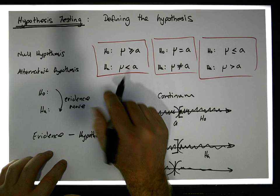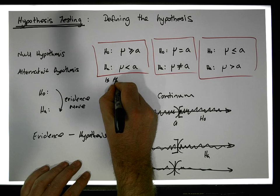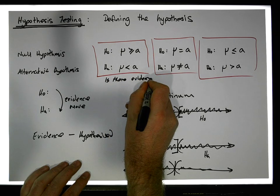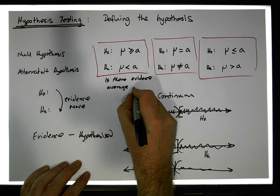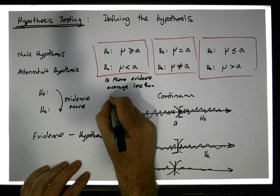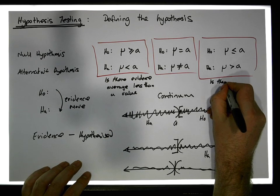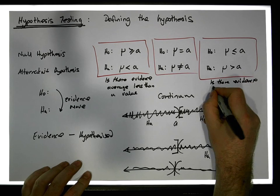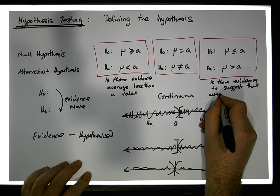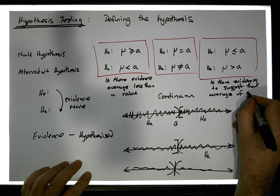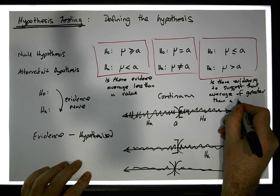Let's try to logically understand these positions. The first test is looking for: is there evidence to suggest that the average of the population is less than a value? The second test is: is there evidence to suggest that the average of the population is greater than a specific value?